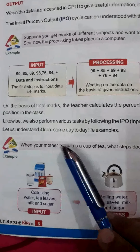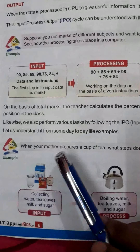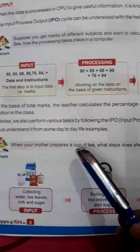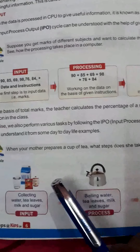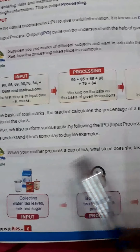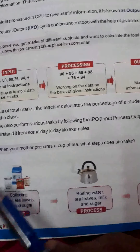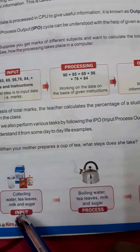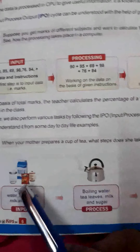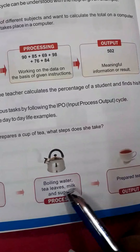Now let us understand from some day-to-day life examples. Normally, when tea is made at home, what does your mother do? First, she prepares and collects all the things needed — water, tea leaves, milk, and sugar — all gathered in one place. That is the input stage.